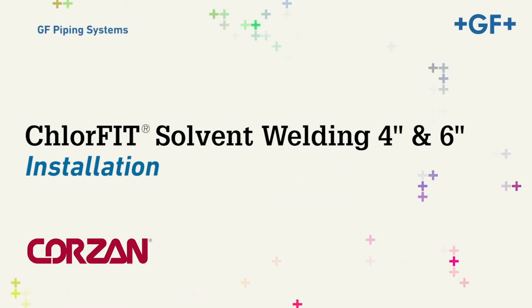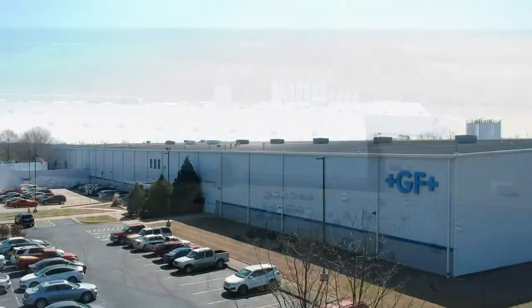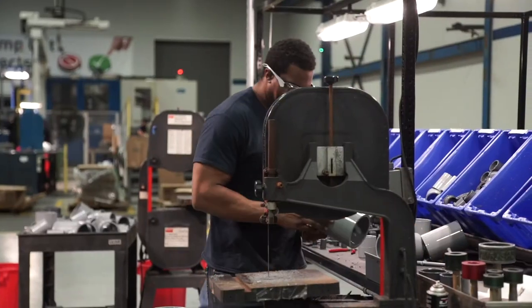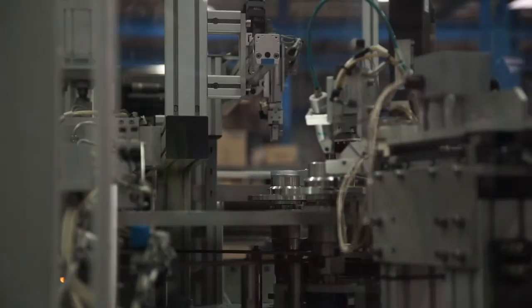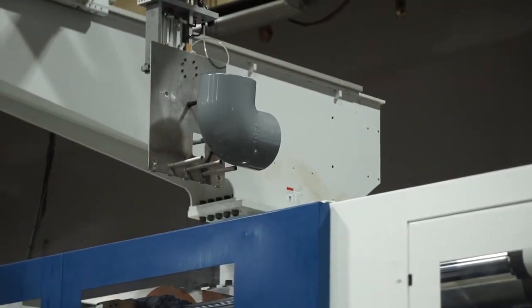Solvent welding ChlorFit Schedule 80 CORSAN CPVC pipe and fittings allows for the connection of plastic piping in a piping system. This fusion creates a strong chemical bond as the pipe and fitting are chemically softened by the solvent and then allowed to remesh their chemical structures.